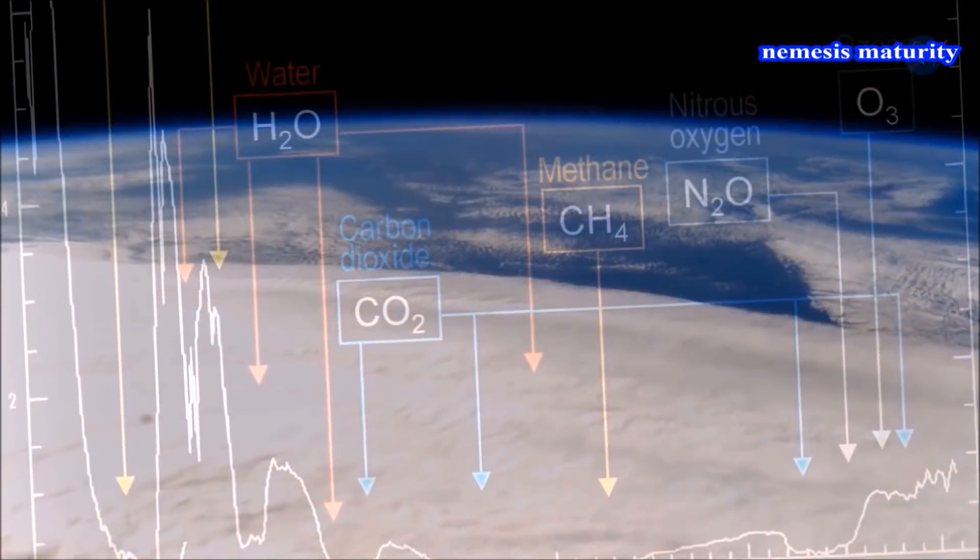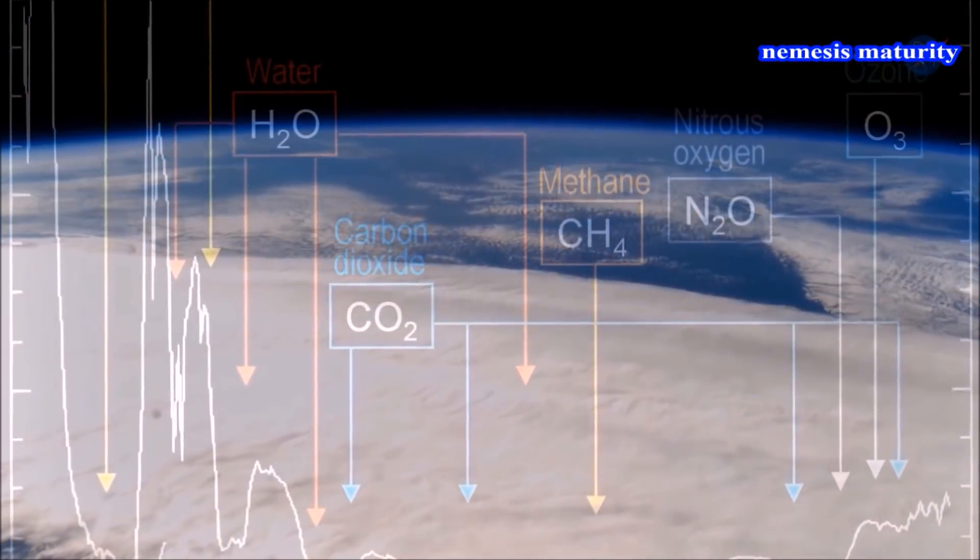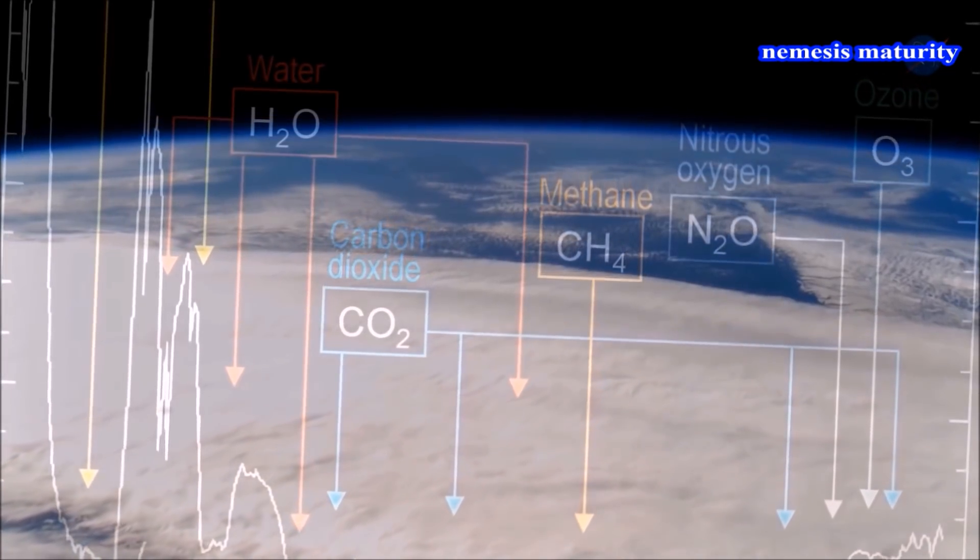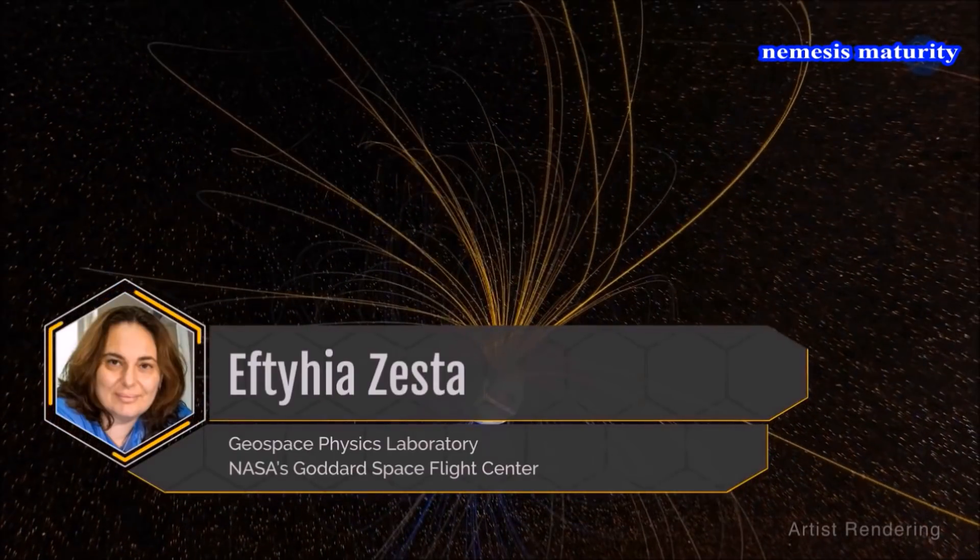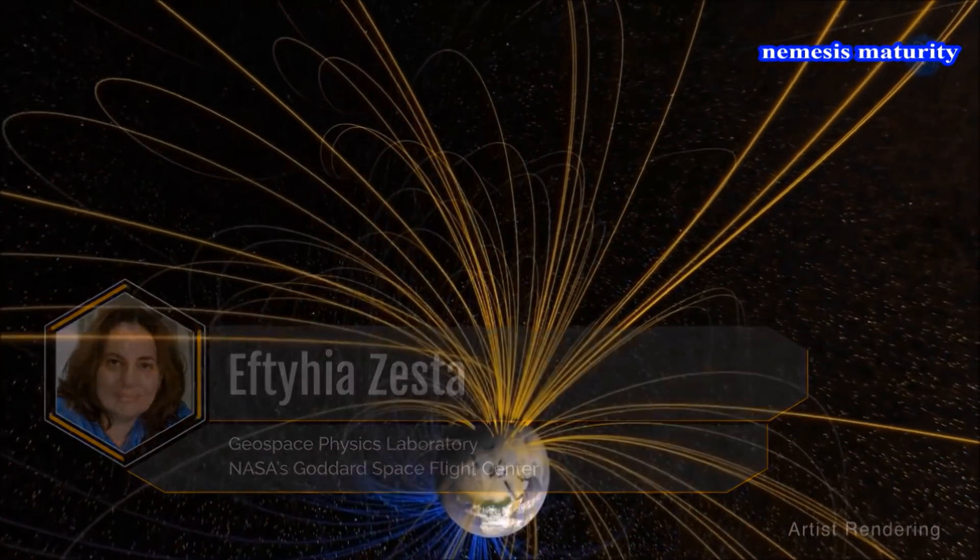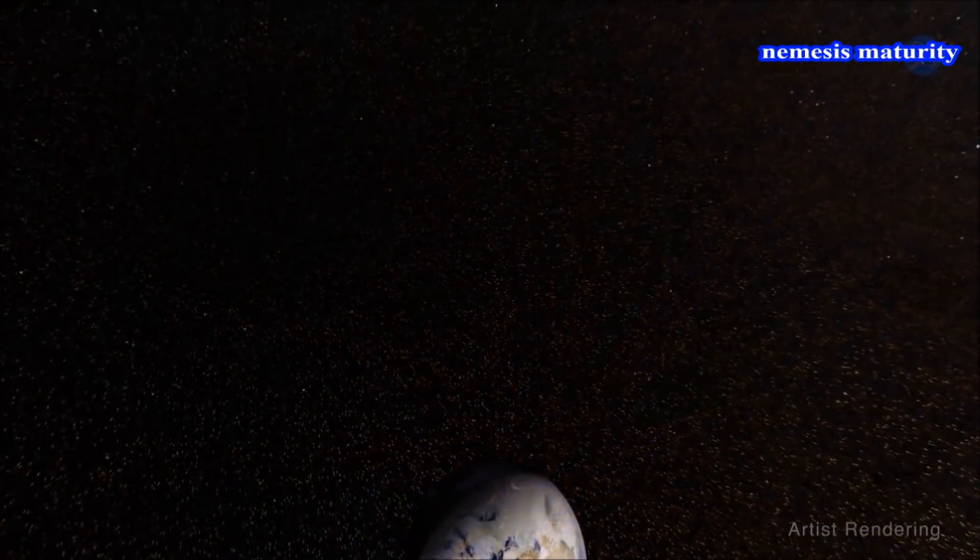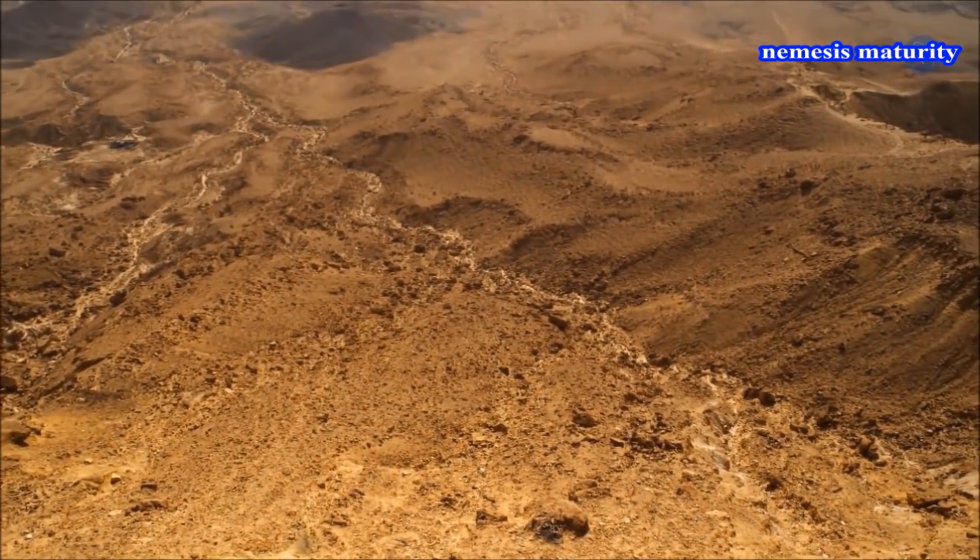By contrast, Earth's magnetosphere seems to have kept our atmosphere protected. Eftehia Zesta of the Geospace Physics Laboratory at NASA's Goddard Space Flight Center notes, if there were no magnetic field, we might have a very different atmosphere left, without life as we know it.